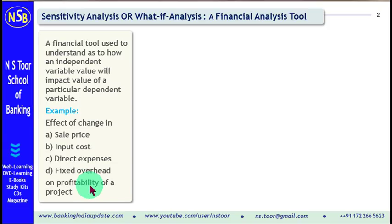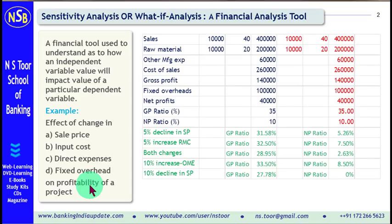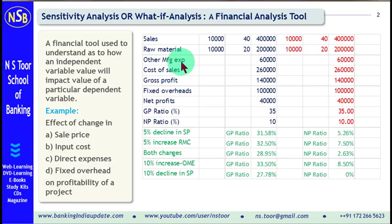Now, we are going to do a case study so that we are able to understand this concept properly. In our case study, we have sales data, raw material information, other expenses information, cost of sales, gross profit, fixed overhead, net profit, and we have also calculated certain ratios.